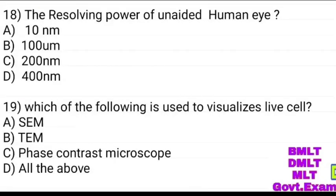The resolution power of the unaided human eye: 10 nanometer, 100 micrometer, 200 nanometer, 400 nanometer. Answer: 400 nanometer.